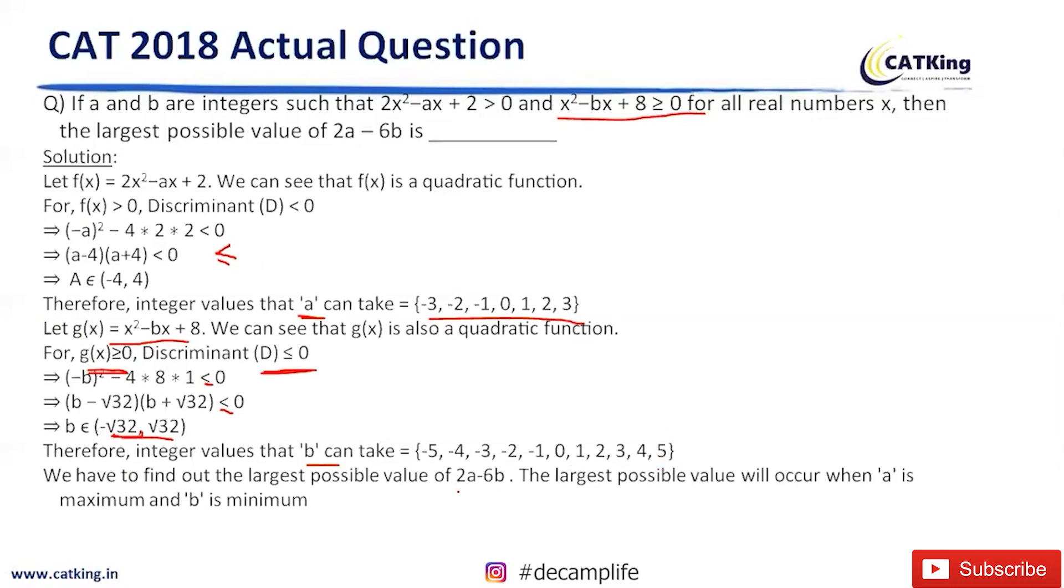Now we need to find out the largest possible value of this number. See, largest number chahiye, so A should be maximum and B should be minimum, because what is being subtracted should be minimum and what is being added should be maximum. Right?